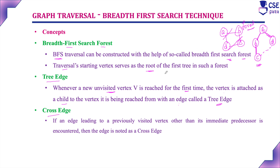A cross edge occurs when an edge leads to a previously visited vertex other than its immediate predecessor. For example, the immediate predecessor of C is B. There is also an edge between C and D, but D is not the direct predecessor through which C was first discovered. C was identified as unvisited from B first, not from D. So the C-to-D edge is a cross edge, while the B-to-C edge is a tree edge. These are all the key concepts related to graph traversal and Breadth First Search.